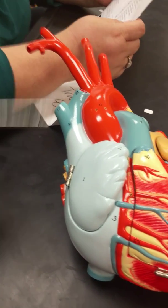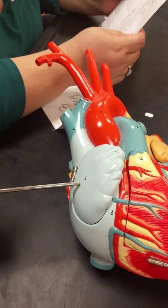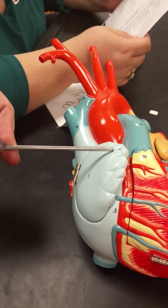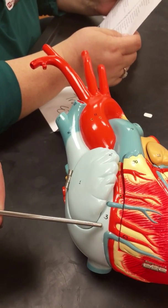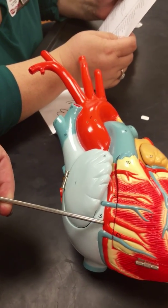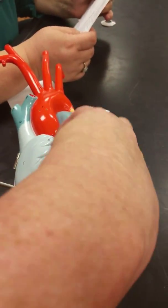1. Right atrium. 2. Right auricle. 3. Coronary sulcus. 4. Right ventricle.